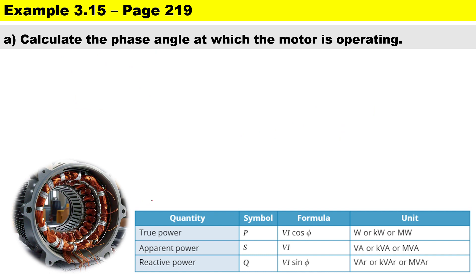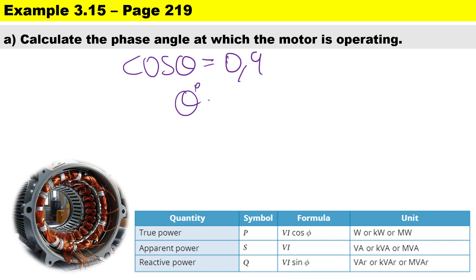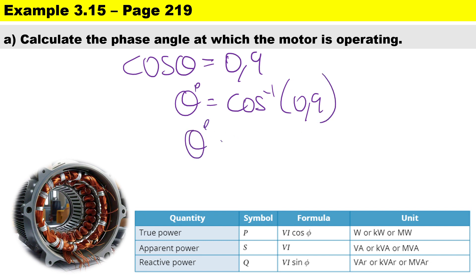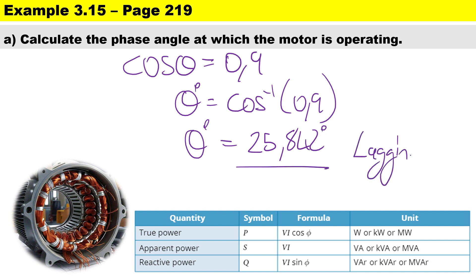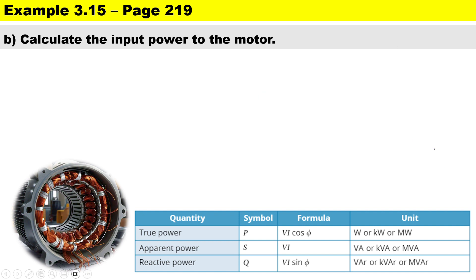The first calculation is to find the phase angle at which the motor is operating. Since the power factor cos θ = 0.9, we take the inverse cosine, so θ = cos⁻¹(0.9) = 25.842 degrees. It is lagging — most electrical circuits are lagging unless it's a capacitor.